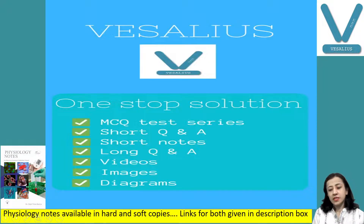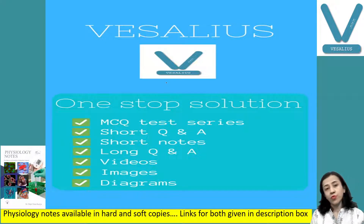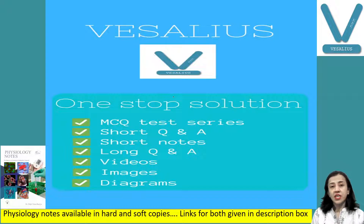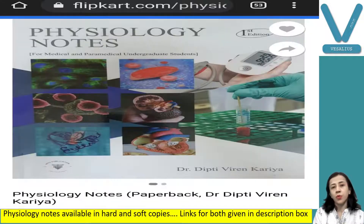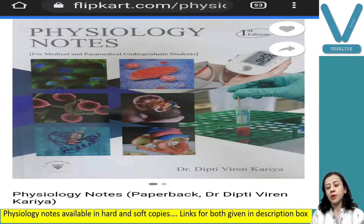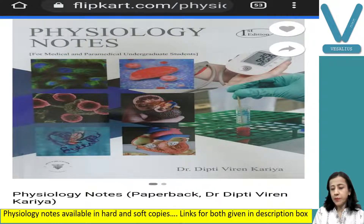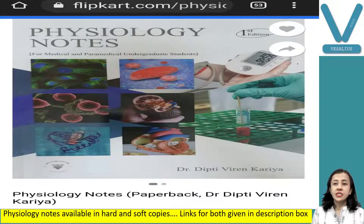Before we start, there is an announcement: if you wish to get a soft copy of my notes you can download the application from the Play Store — that is Vesalius — and you can subscribe. If you wish to get a hard copy, you can order on Flipkart as well as Amazon. My book, Physiology Notes, is available there. You can also join my WhatsApp group at number 7863822668.